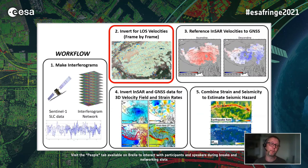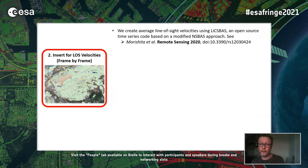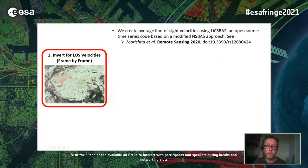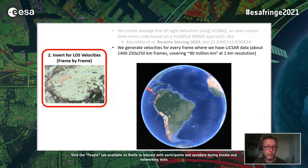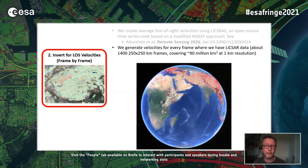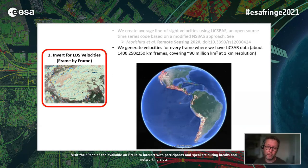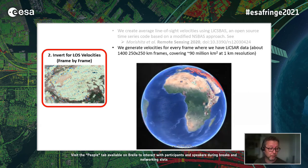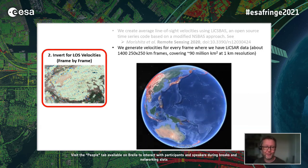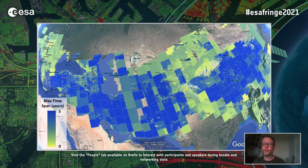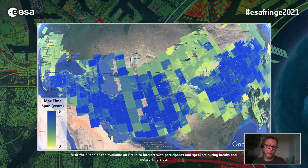Once we have those interferograms, we invert frame by frame for line-of-sight velocities using the LiXPAS code — an open-source time series code based on a modified NSBAS approach. We generate velocities for every frame where we have LiXAR data: about 1,400 frames covering something like 90 million square kilometers. For this routine processing we do that at one kilometer resolution. The main indicator of quality is the time span of the network processed; large portions of the Alpine Himalayan belt have around five years of data.